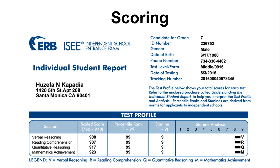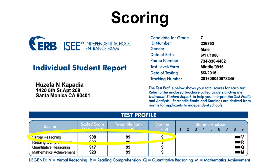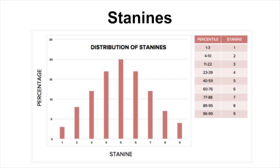The biggest question I always get is: how is the ISEE scored? The ISEE is scored by section, so you will get an individual score per section. You can get anywhere from a one to a nine — these are called stanines. A one is the lowest, a nine is the highest. So if you get a nine in each section, that means you've gotten the highest score possible on the middle level ISEE. The tricky thing about the ISEE is these stanines correlate directly to percentile rank. So if you want to know what it takes to get an eight or a nine, you have to look directly to the percentile rankings.